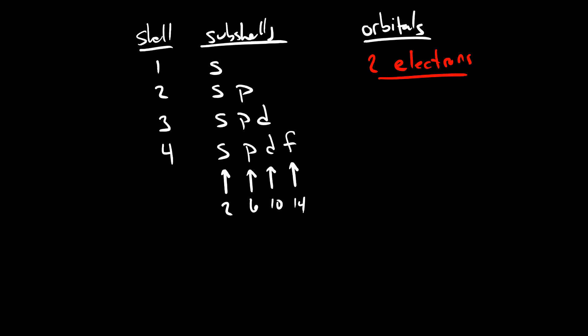From this we can figure out how many orbitals each subshell has. If the capacity of the S subshell is two electrons, there must be just one orbital in the S subshell — one S orbital. The P subshell has a capacity of six electrons, so if each orbital can only hold two, we must have three different P orbitals. The D subshell has a capacity of ten, so we must have five different D orbitals, and the F subshell has a capacity of fourteen, meaning we must have seven different F orbitals.